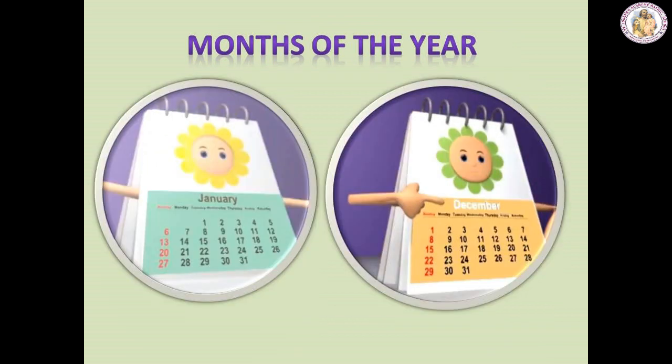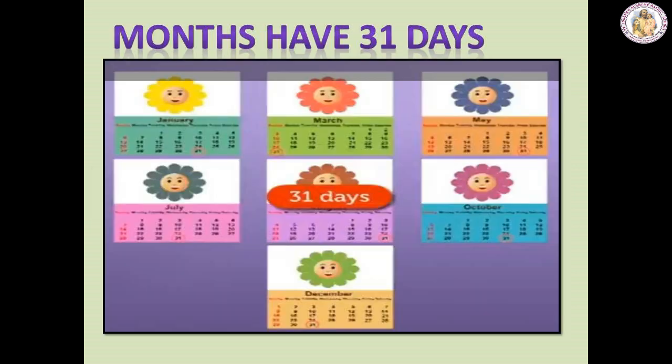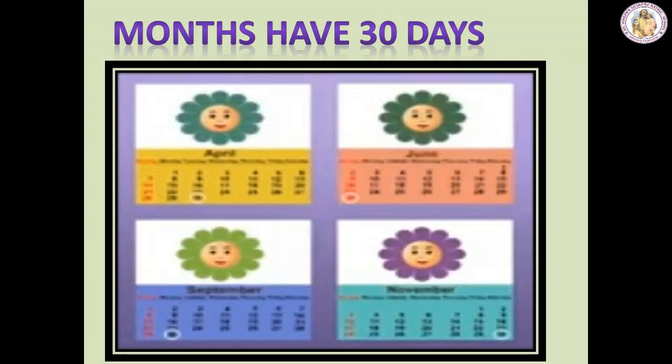There are 12 months in a year. January is the first month of the year and December is the last month of the year. January 1st is the first day in a year. There are 7 months with 31 days: January, March, May, July, August, October and December.